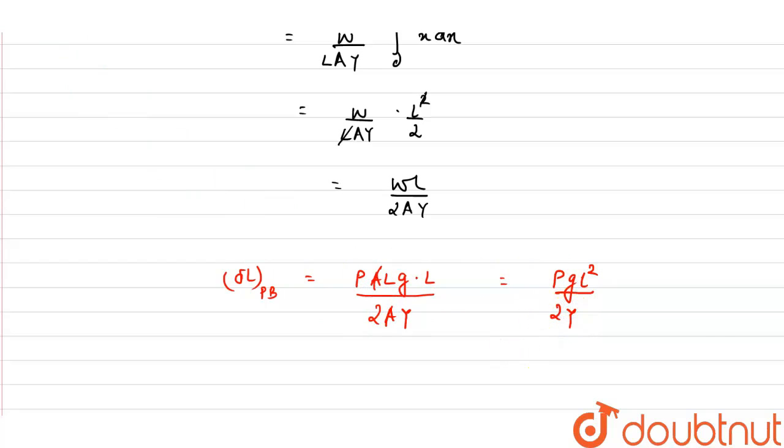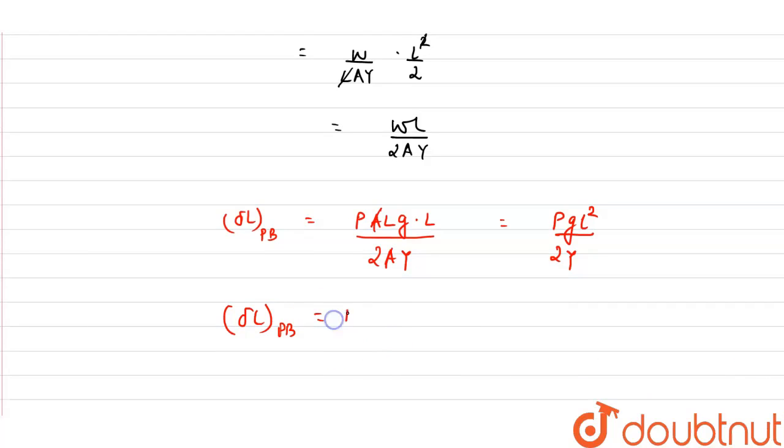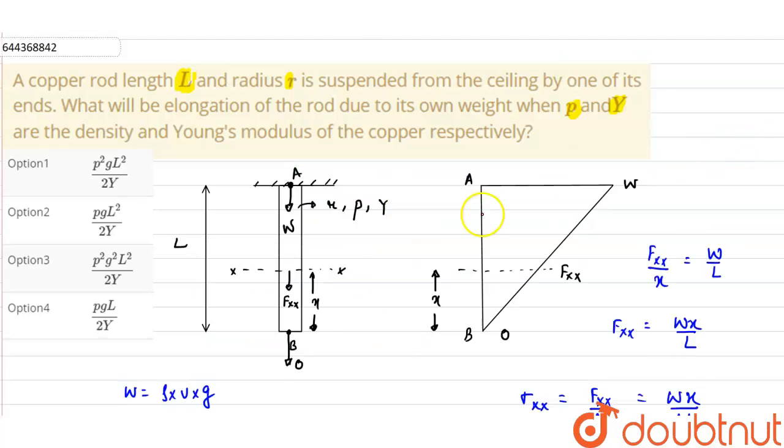So the elongation of the prismatic bar under its own weight comes out as ρgL² upon 2 times Young's modulus. Choosing from the options, we see that option 2 is correct.